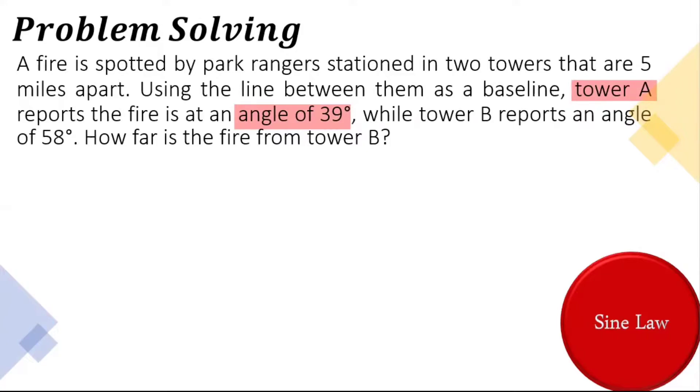First thing that we have to do is to draw our figure. So here is Tower A, Tower B, and the location of the fire. So the highlighted words there is Tower A, which measures 39 degrees. Then we have here 58 degrees, which is the Tower B.